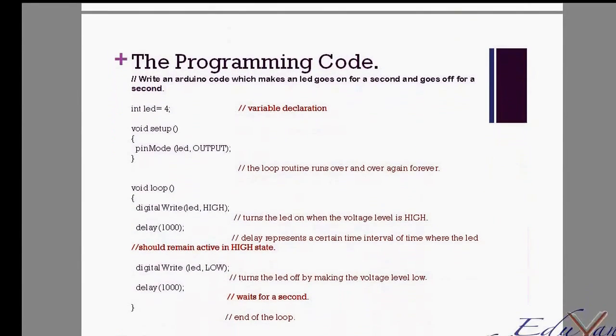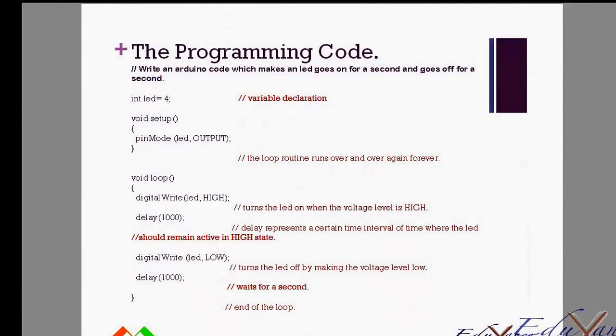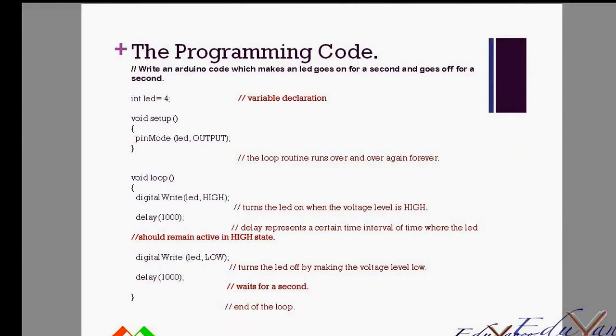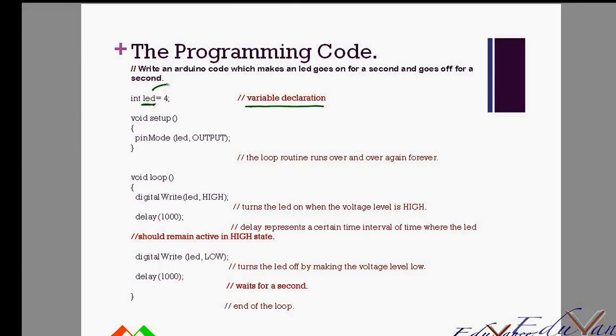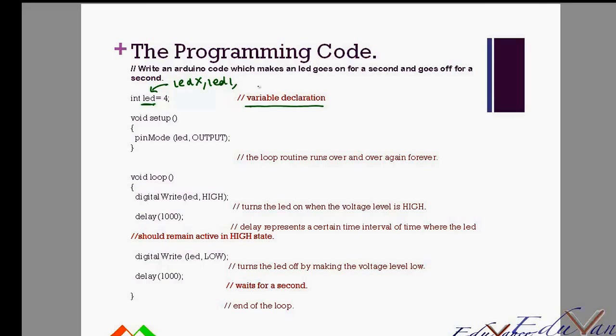The program that you will write in the Arduino interface: first we always do the variable declaration. So we will declare the LED variable. This is a variable—again, you can name this as LED X, LED 1, you can call this John if you like, you can call this Jimmy, whatever name. So we just named it as LED.